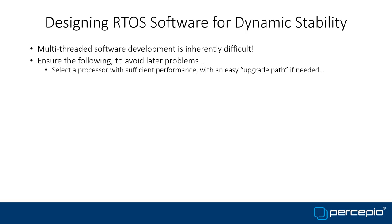Early in the project, when selecting a processor, it's important to have sufficient performance and an easy upgrade path — for example, a pin-compatible, faster processor if needed. Your application will probably depend on base software from a vendor: middleware, an RTOS, drivers, or a board support package. You don't write everything from scratch, and this base software may not be perfect either. You need to ensure these critical base functions are of high quality and have the performance you need.